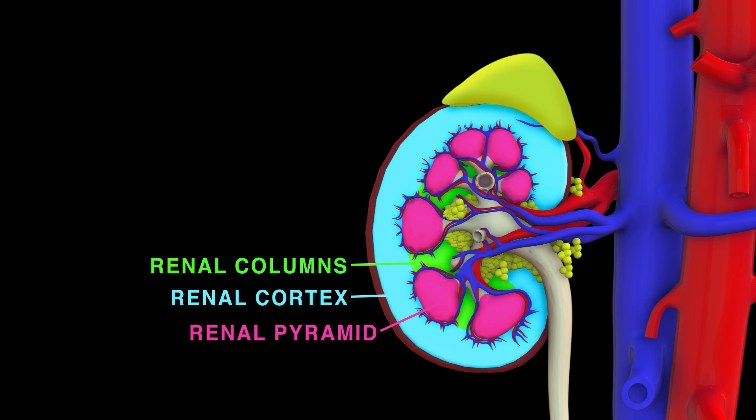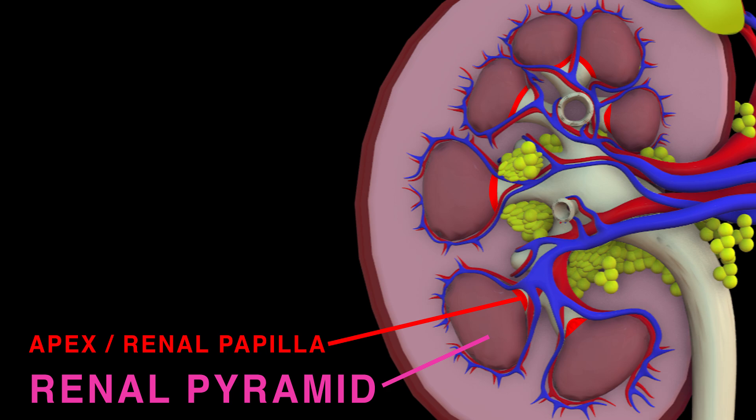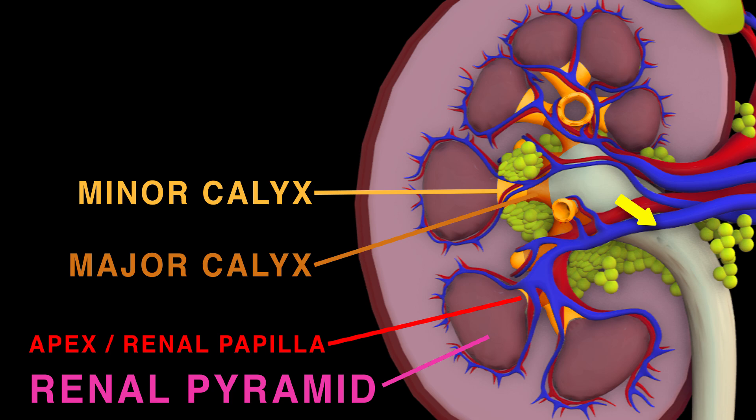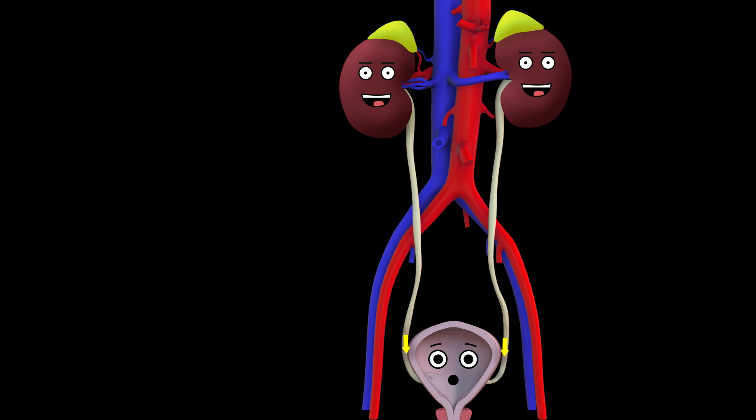Each renal pyramid's apex, or renal papilla, connects draining into a minor calyx, which urine production collects. Several minor calyces merge to form major calyces, which pass urine to the flat and funnel-shaped renal pelvis. The urine drains from the renal pelvis to the ureter, which passes along the urine to be stored in the bladder.